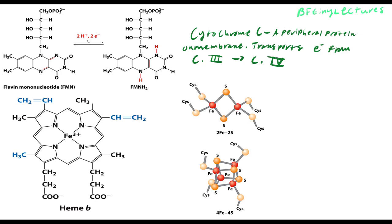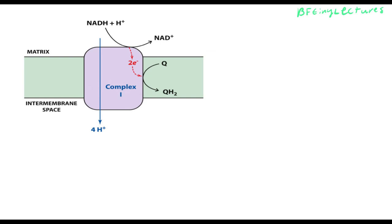Complex 1 and 2 share a taxi (coenzyme Q), but complex 3 has its own private mobile electron carrier (cytochrome C). Cytochrome C uses a heme group — in the middle of its structure you find an iron atom that allows it to carry electrons. Now let's talk about the complexes in greater detail. Complex 1 is called NADH-ubiquinone oxyreductase. Just remember that complex 1 deals with NADH, uses ubiquinone as an electron carrier, and performs a redox reaction.